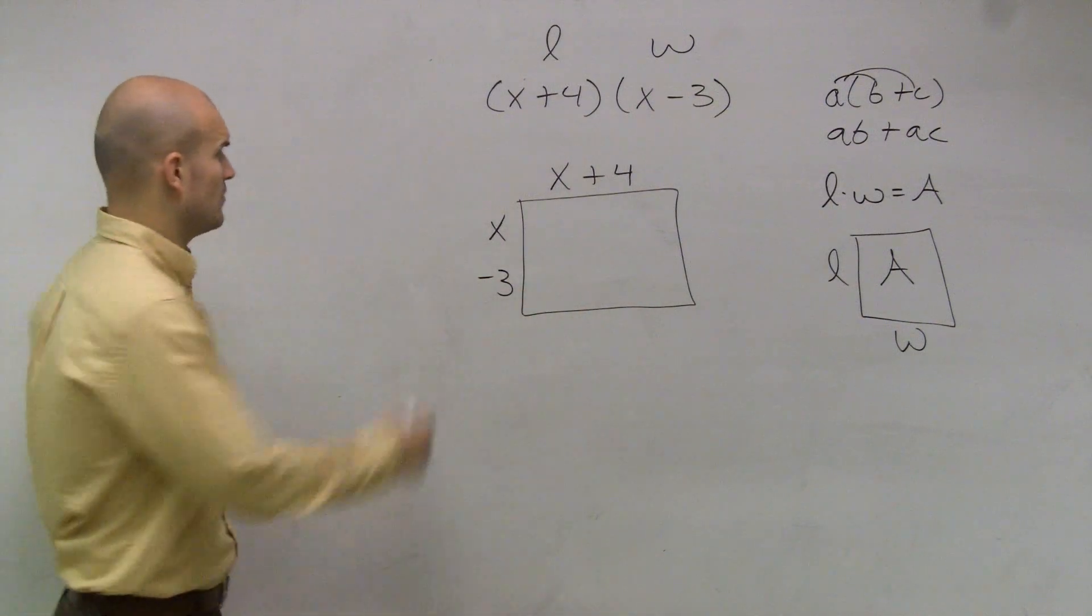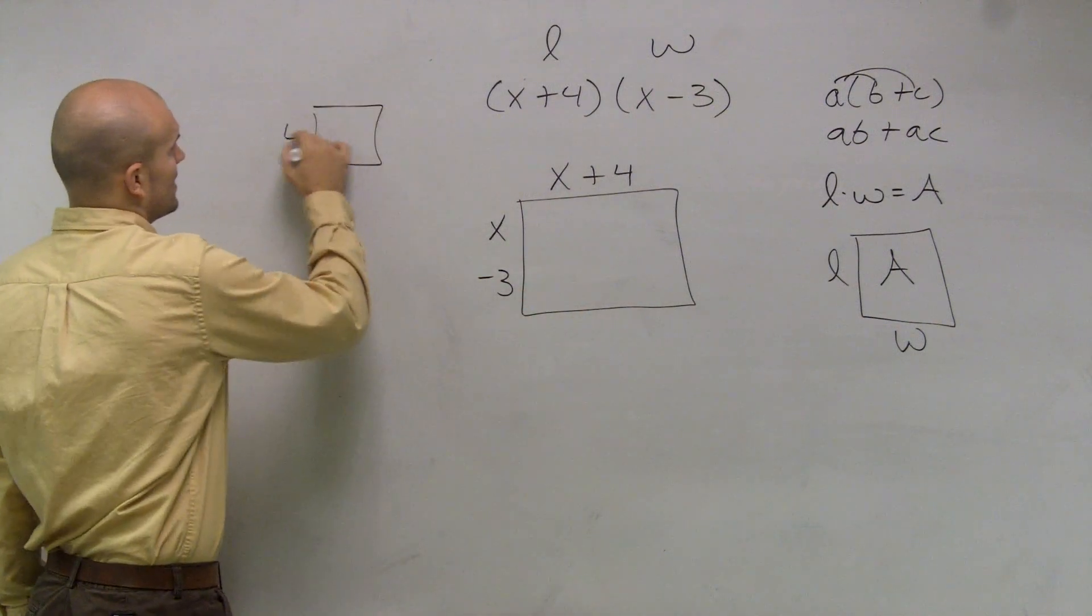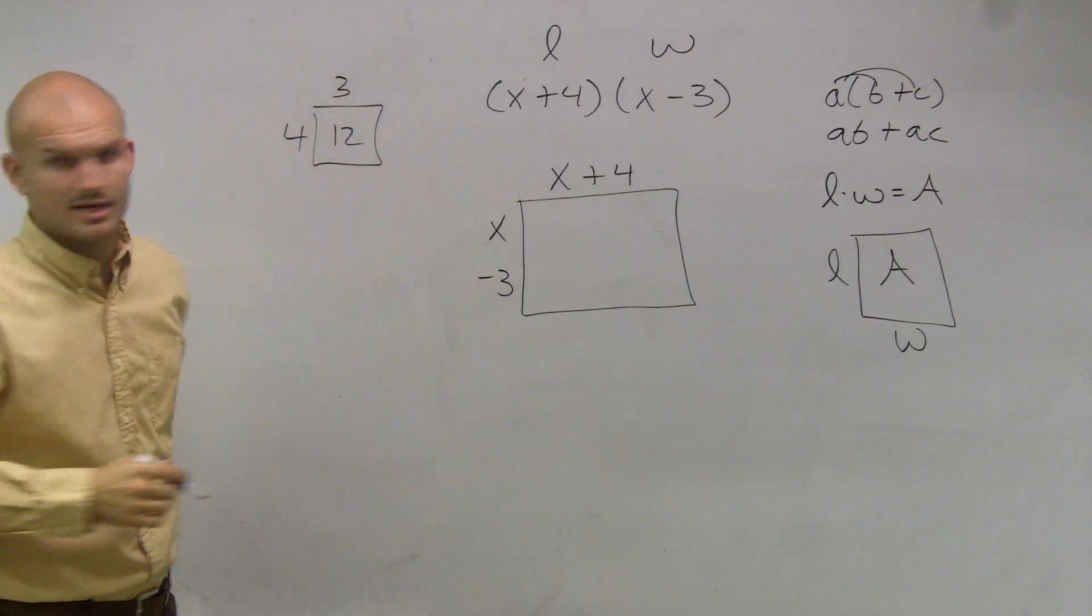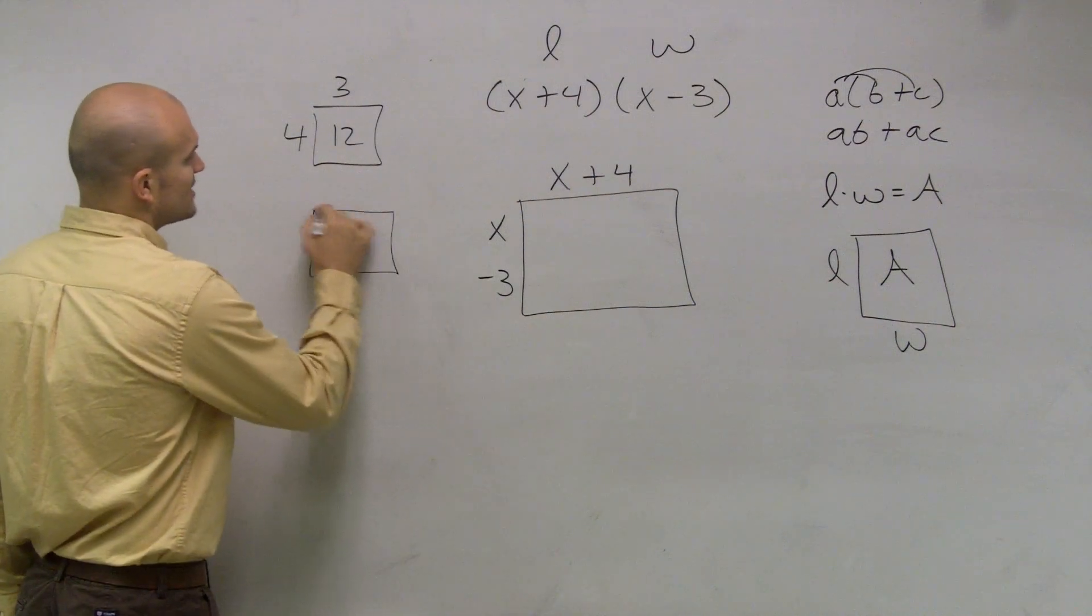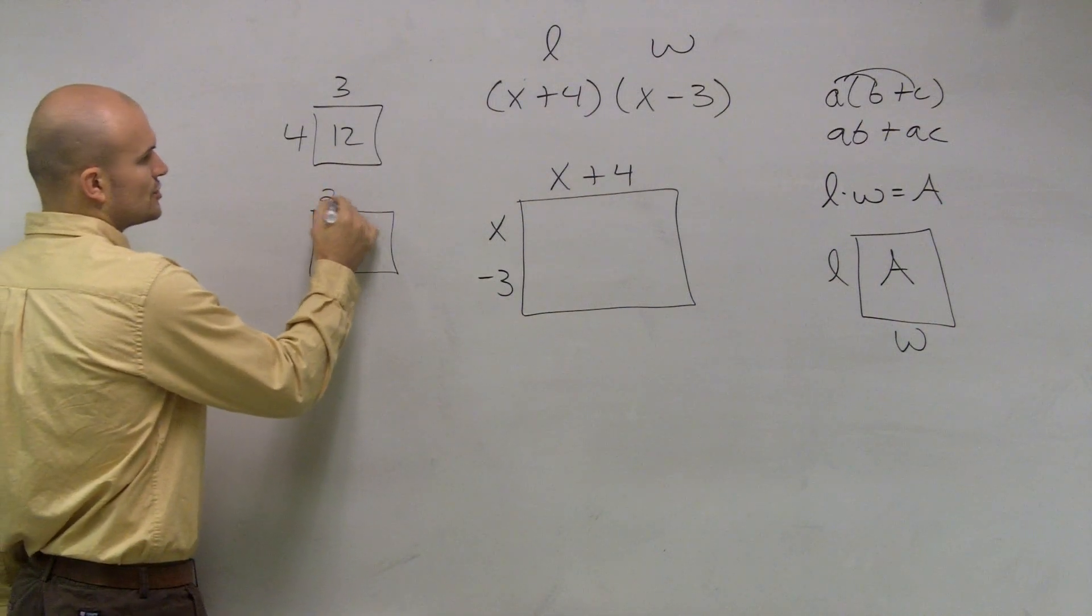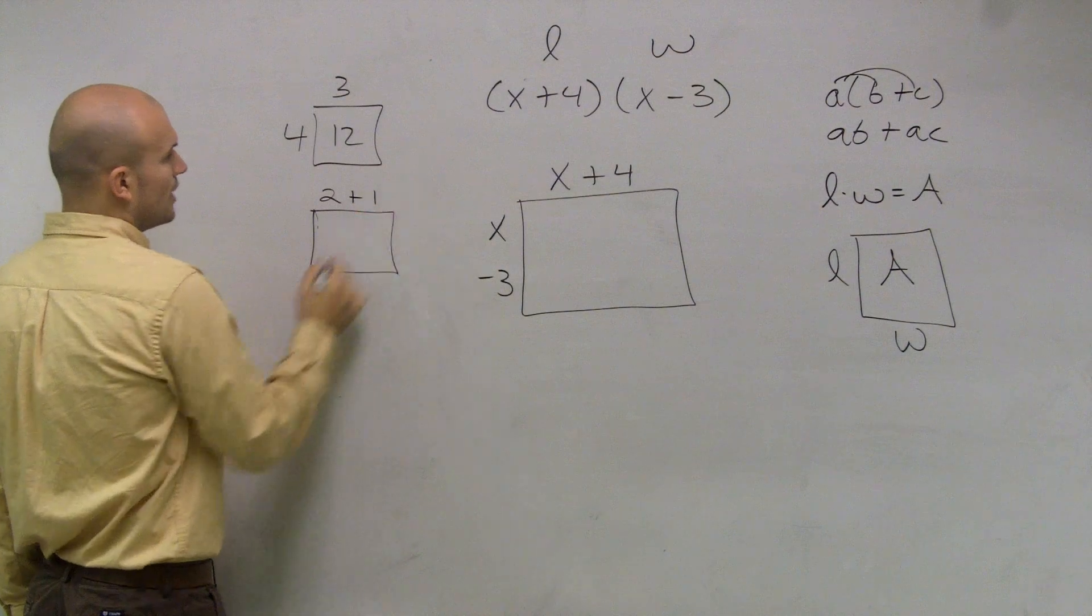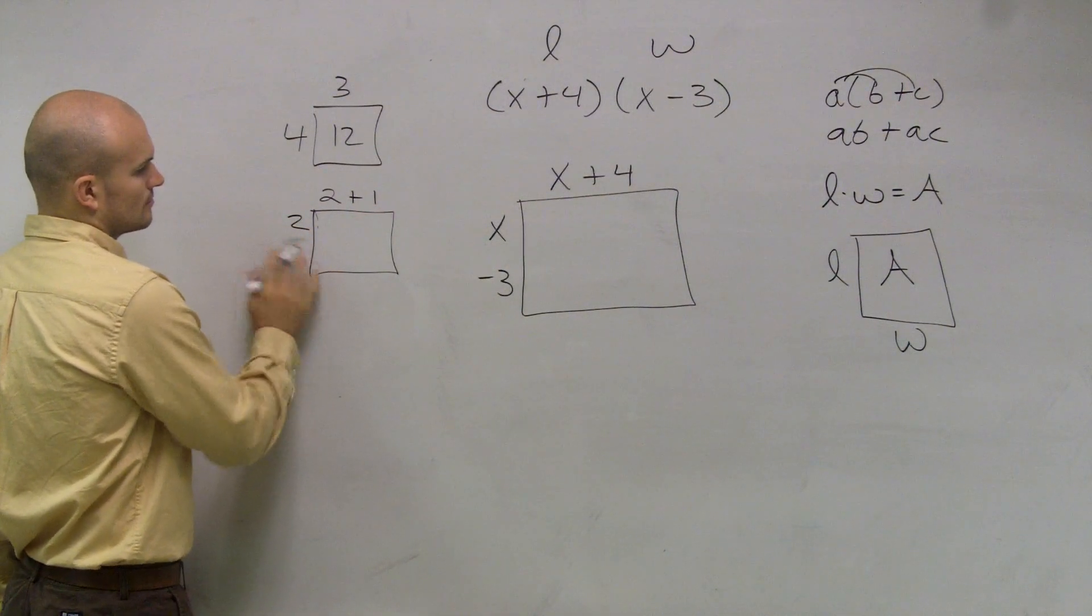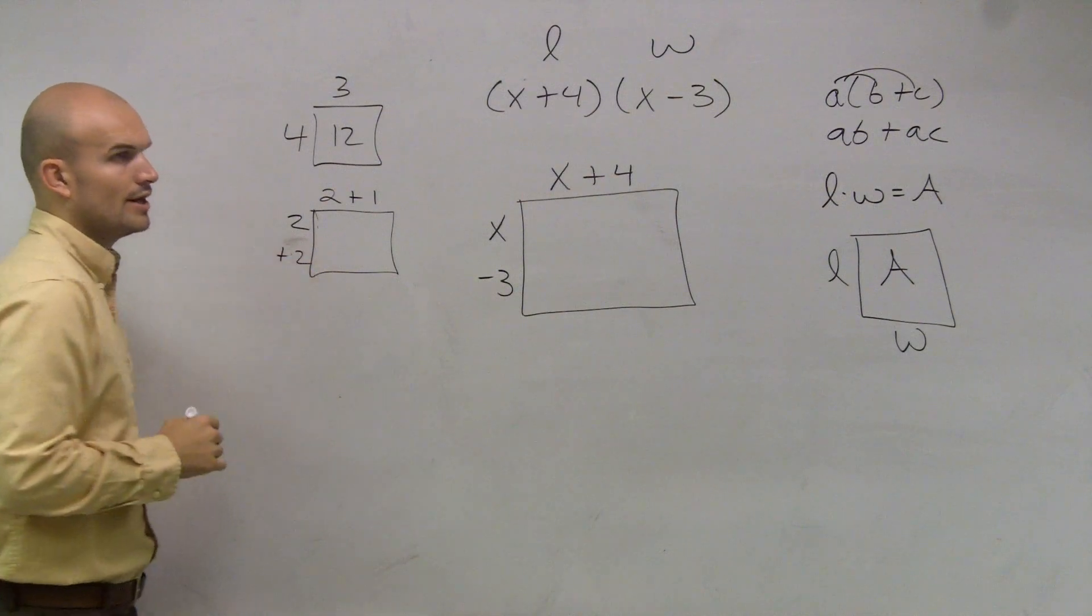Now this is pretty difficult. You're like, well, this makes sense. I understand 4 times 3, that's 12. But what do you do when there's two numbers there, right? Well, what we can do is we could separate that. We could do 2 plus 1, right? And we could do 2 plus 2. All right?